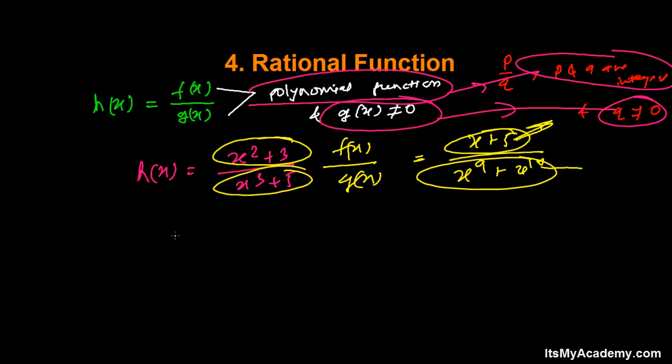Simply, we can say a rational function is defined from real numbers to real numbers, such that it's the ratio of two polynomial functions. Simply use it in that way.